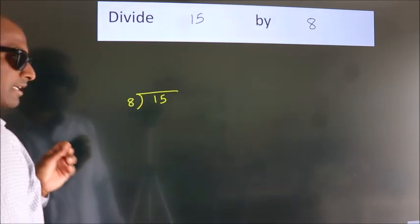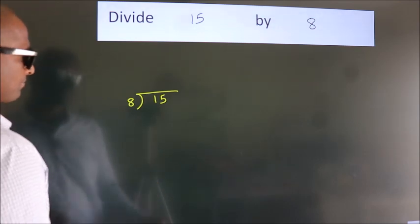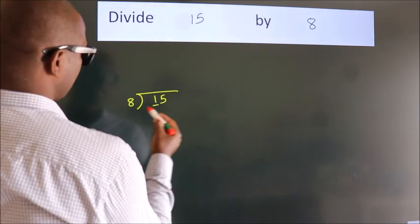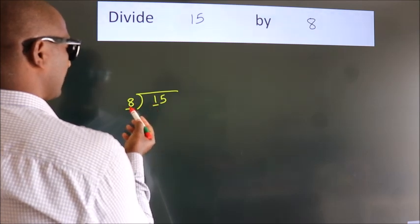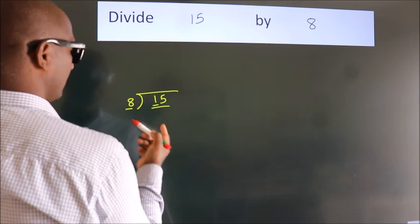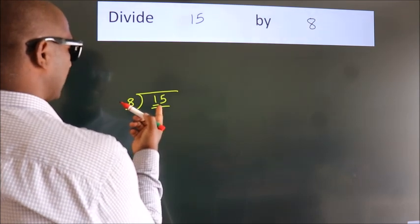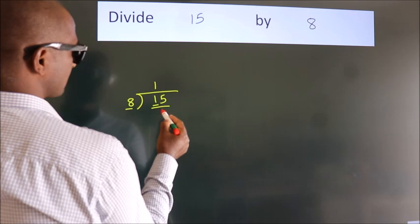This is your step 1. Next, here we have 1, here 8. 1 is smaller than 8, so we should take 2 numbers: 15. A number close to 15 in the 8 table is 8 once, 8.